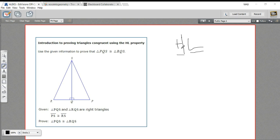Basically, what this means is in a right triangle, if you've got two right triangles and you know the hypotenuse and one of the legs are congruent, then the two triangles are congruent.